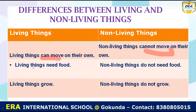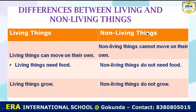The second point: living things need food. We need different kinds of fruit, vegetables, ice cream, and chocolate. But non-living things do not need food. For example, you don't feed chocolate or ice cream to a notebook. So living things need food; non-living things do not need food. The third point: living things grow. Every year you are growing in size and height. But if you take a notebook, pen, or pencil, it does not grow. So living things grow; non-living things do not grow.